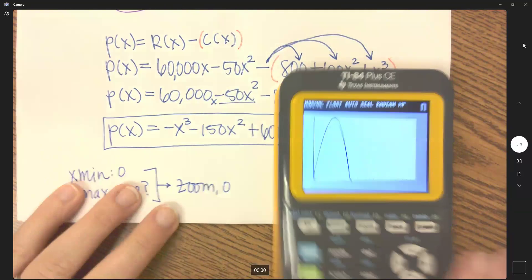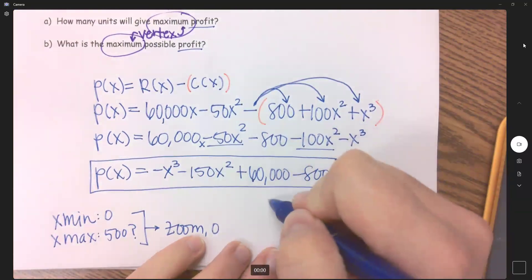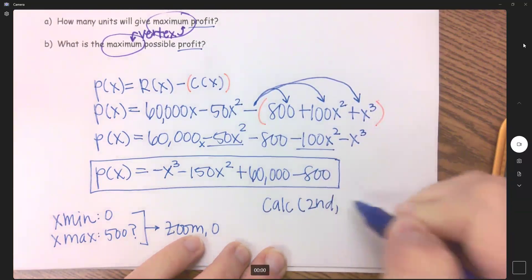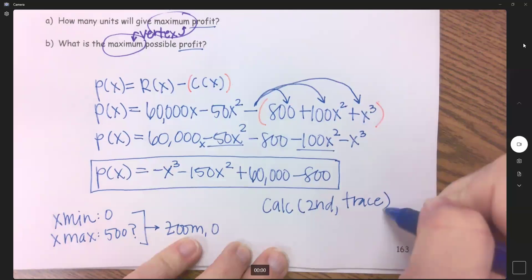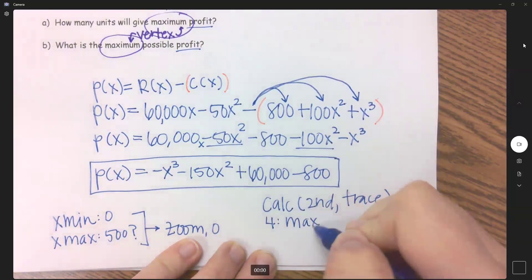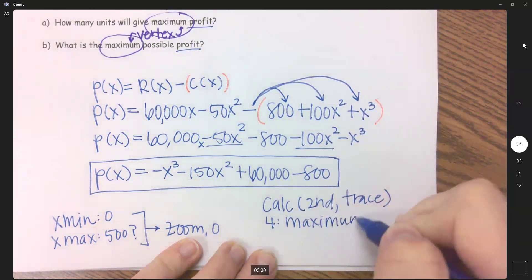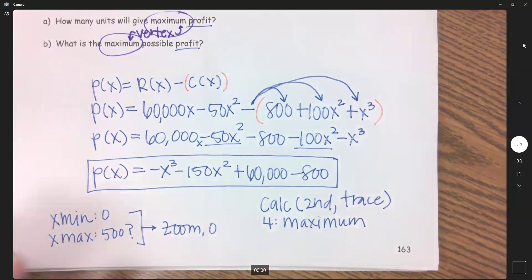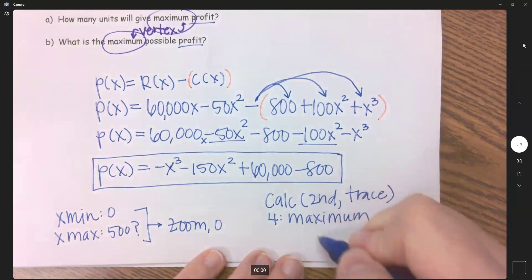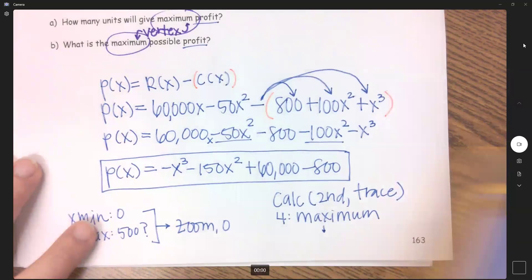Now when I am finding this, it's going to be very similar to these right here. I am going to do calc, which is second trace. So we've been spending a lot of time in this calc area here. And then number four is my maximum.